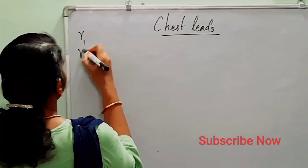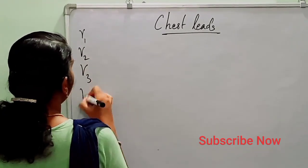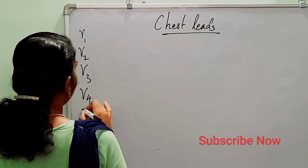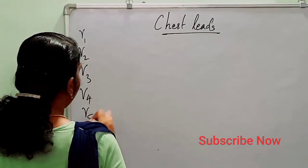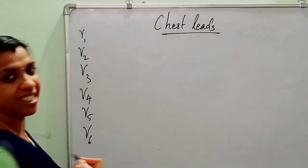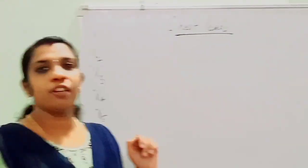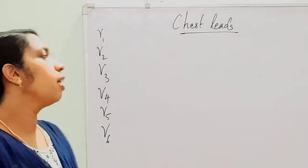The six chest leads are V1, V2, V3, V4, V5, and V6. So we will see the position of each of these chest leads.